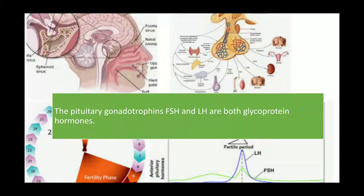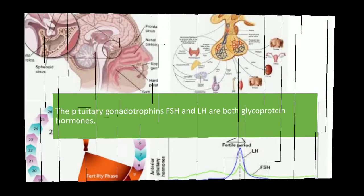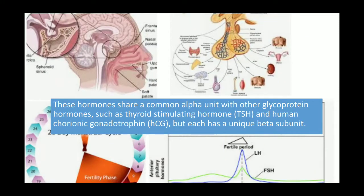The pituitary gonadotrophins FSH and LH are both glycoprotein hormones — that is their biochemistry. FSH, follicle stimulating hormone, and LH, luteinizing hormone, are released from the pituitary glands and play a very important role in the regulation of the menstrual cycle.